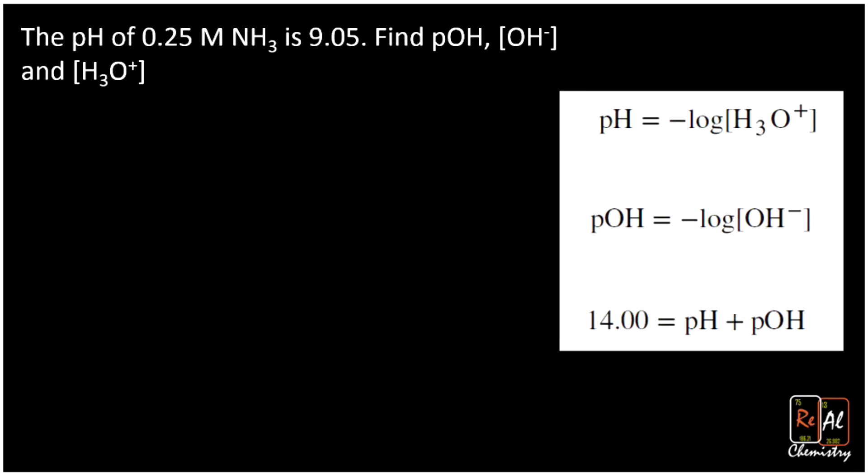So since we know pH, we know that we can either go and use this equation to get pOH, or this equation to get H3O+. Let's go ahead and find the pOH first.